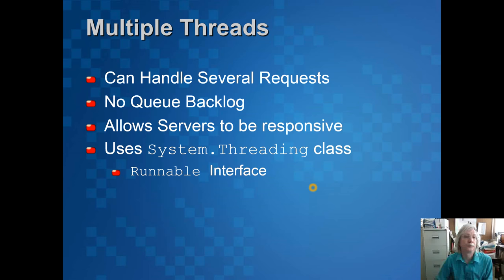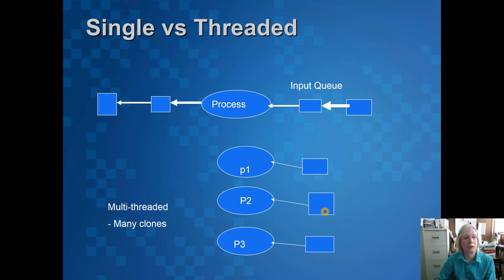Let's look at multiple threads. Multiple threads is how people would expect servers to work more professionally. They can handle several requests at the same time. There's no queue backlog. It allows the servers to be responsive. When you connect it doesn't say wait, there's another request coming in. Your request is independent of other people's requests. To do that you have to use threading, and that's implemented in C# with the System.Threading class and the Runnable interface. We're not going to talk a lot about this in this lecture which is mainly about networking, but it is something you need to understand and you can research in your own time.